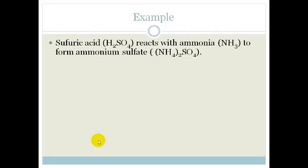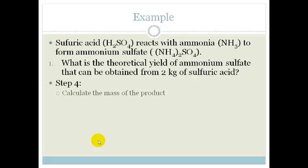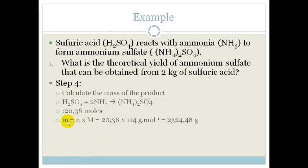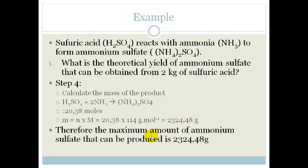Now, we need to know how much that is in mass. So, what we do then is we calculate the mass. So, we know that it's 20.38 moles. Number of moles is mass over molar mass. So, mass is number of moles times the molar mass, which is 20.38 times the molar mass of this, which if you work on the periodic table, you work out to be 114 grams per mole, which works out to be 2,324.48 grams. Okay, that's a lot of grams. Therefore, the maximum amount of ammonium we can actually produce is 2,324.48 grams or 2.32 kilograms.